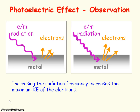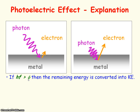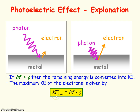Another observation of the photoelectric effect was that if the frequency of the electromagnetic radiation was increased, then the maximum kinetic energy of the electrons also increased. That's because if the photon energy is greater than the work function, then any remaining energy — the difference — is converted into the kinetic energy of the electron. So the maximum kinetic energy of the electron equals the photon energy minus the work function.